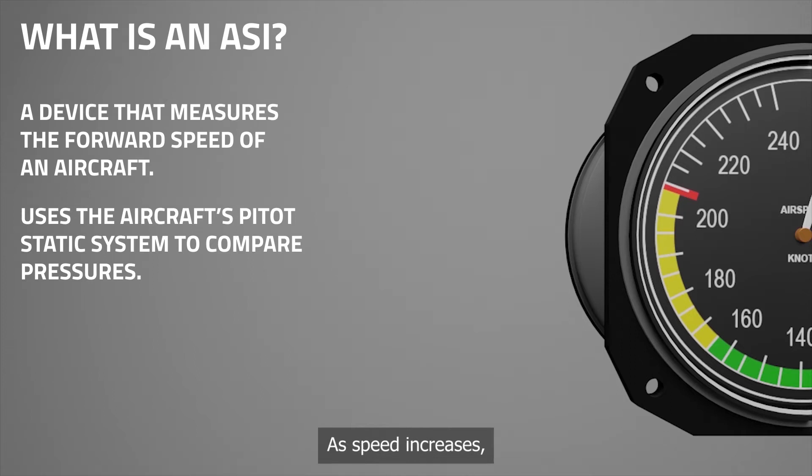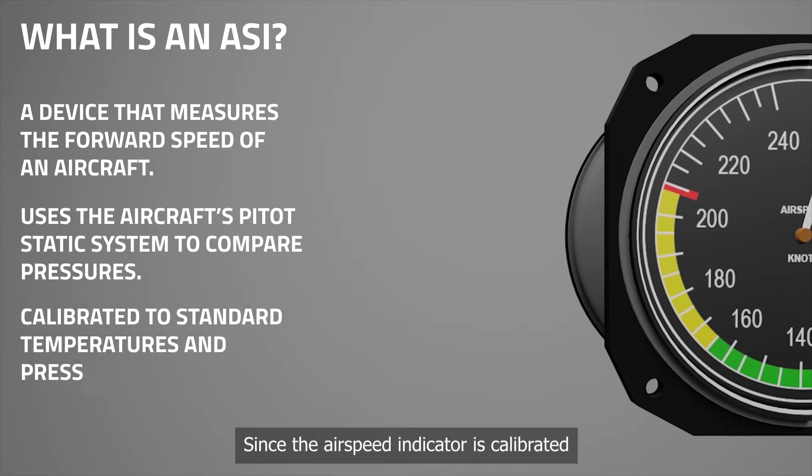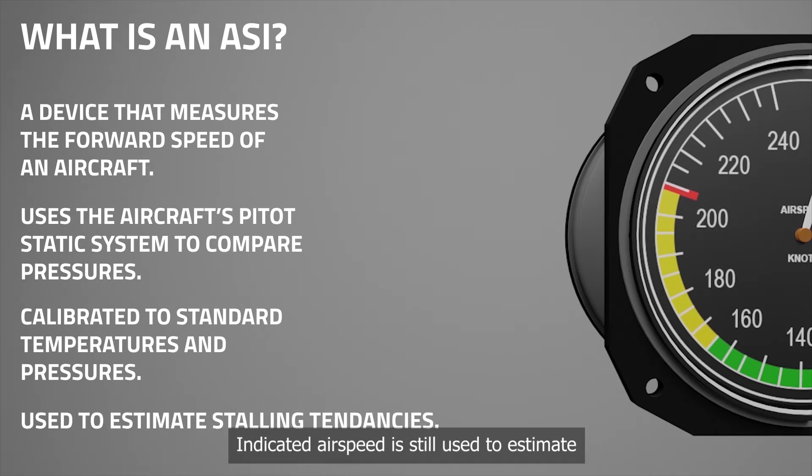As speed increases, the difference between these pressures increases as well. Since the airspeed indicator is calibrated at standard temperature and pressure, its readings are inaccurate at different temperatures and altitudes. An indicated airspeed is still used to estimate an aircraft's tendency to stall. Instruments that electronically correct for altitude differences and temperature give the true airspeed, which is used to calculate the aircraft's position.